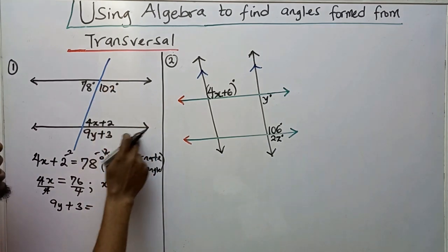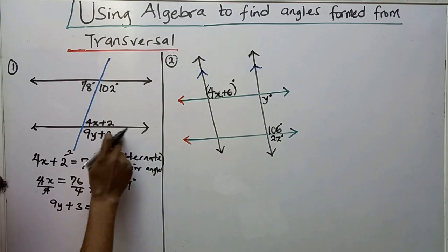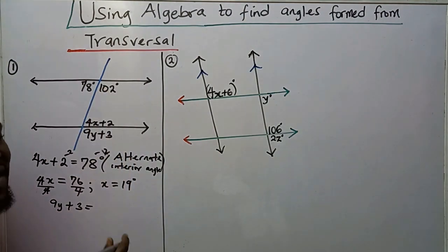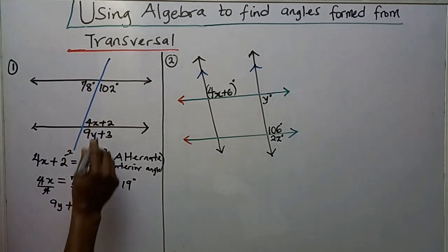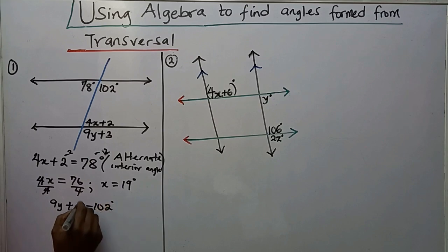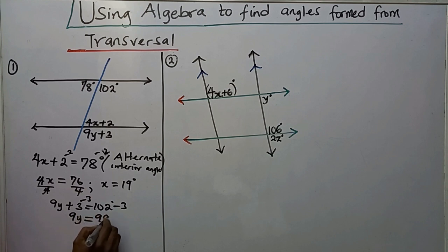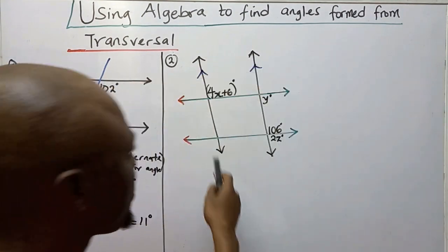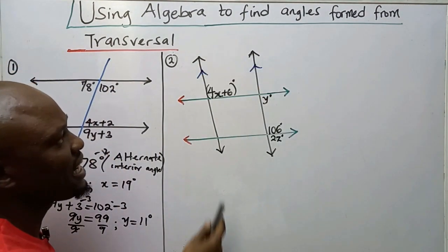Now 9Y plus 3 and the 102 degrees are at the bottom of their respective parallel lines, so they are in the same position — they are corresponding angles and therefore congruent. So 9Y plus 3 equals 102. Subtracting 3 from both sides gives 9Y equals 99. Dividing by 9, Y equals 11 degrees.